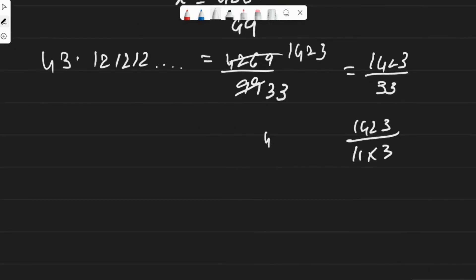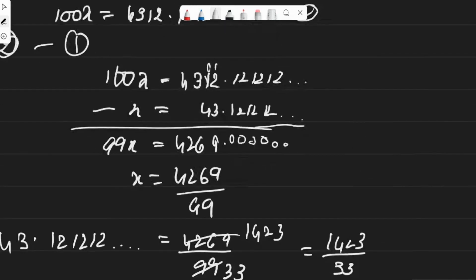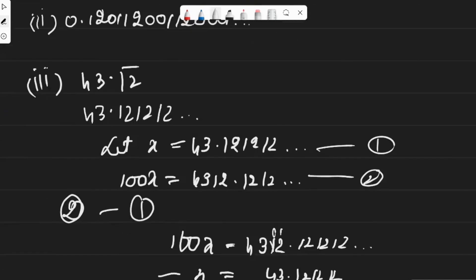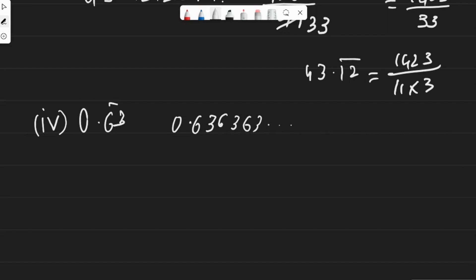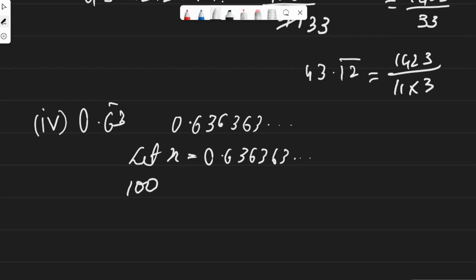The fourth one is 0.63 bar, which means 0.636363... and so on. Let x = 0.636363... We multiply by 100 because two digits are repeating — if one digit is repeating multiply by 10, if three digits multiply by 1000, and so on. So 100x = 63.6363... This is the second equation.